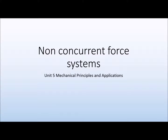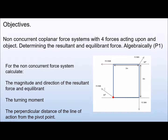Hi guys. In this video we're going to be looking at non-concurrent force systems, which comes under Unit 5, Mechanical Principles and Application for the BTEC National qualification. The objective is to look at a non-concurrent coplanar force system with four forces acting upon an object, and from that we need to determine the resultant and the equilibrium force algebraically. This maps to the pass criteria P1 for Unit 5. We need to calculate the magnitude and direction of the resultant force and the equilibrium.